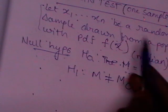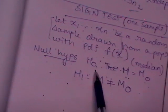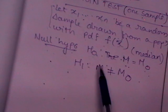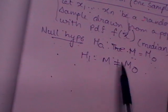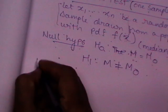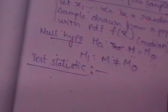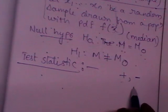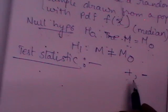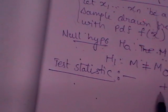Under the sign test for one sample, you write the description about the sample and PDF, then the null hypothesis that the median equals a specified value, then the alternative hypothesis, and then the test statistic. The name 'sign test' tells us to focus on signs — either positive or negative. The test statistic is based on these signs.